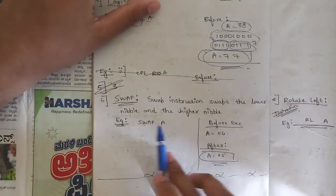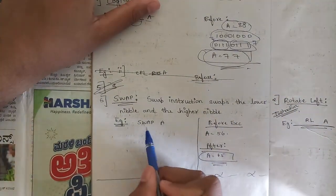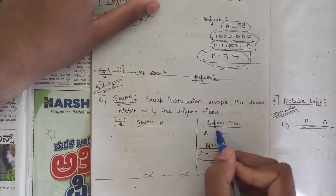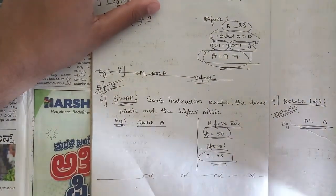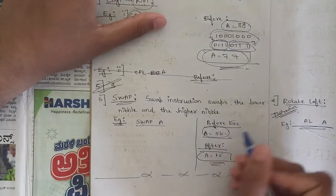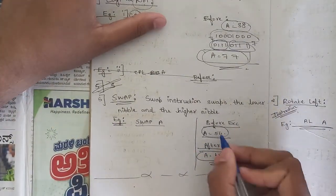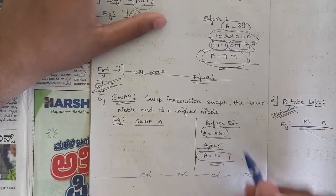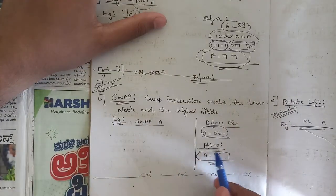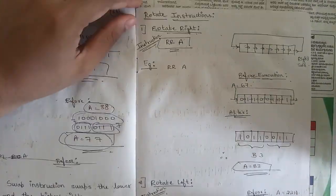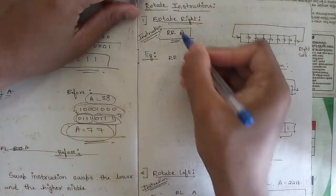One more important instruction is the SWAP instruction — it swaps the lower nibble with the higher nibble of A. For example, if A is 56H before execution, after SWAP A the result is 65H: the 5 and 6 are swapped. This is the simple SWAP instruction.